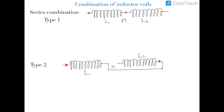In this first case of series combination, you can see that there are two coils connected in series. I have drawn these two dots, which have a very important significance: they show that the current entering in this coil and the current entering in the other coil will be in the same direction.